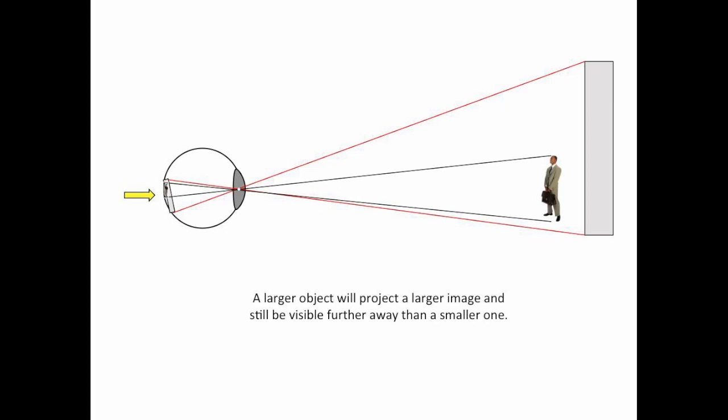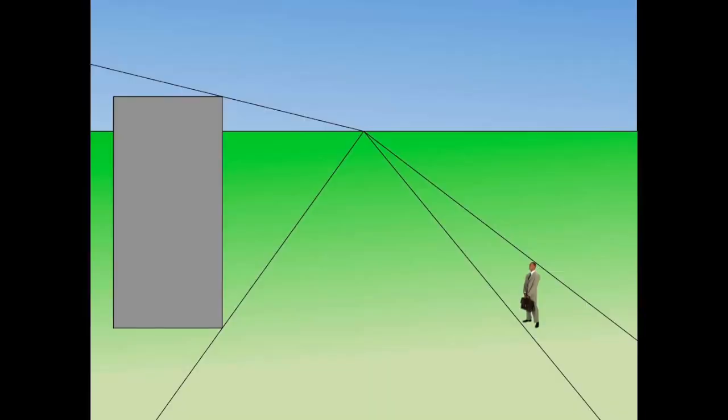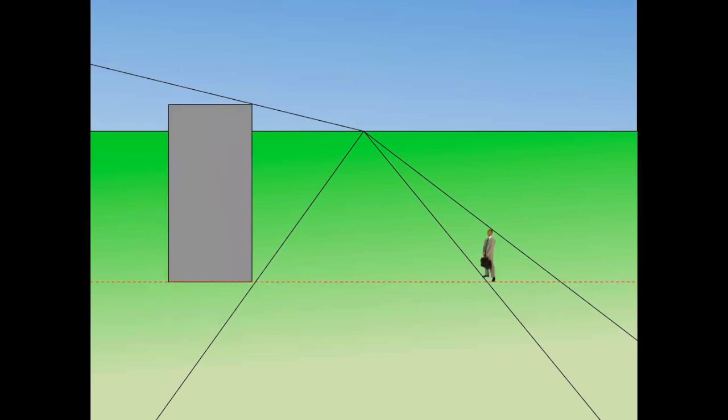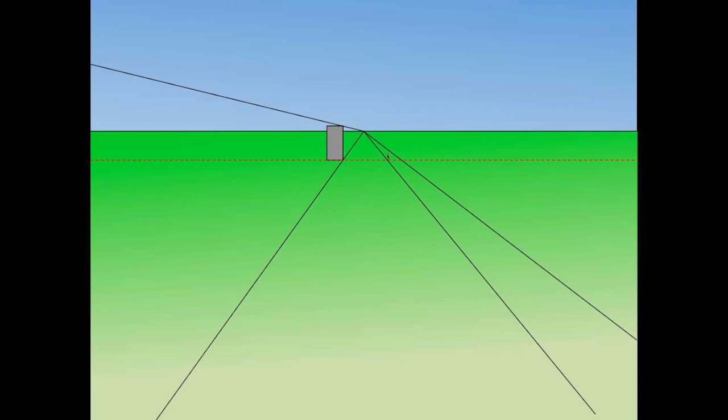So here we've got our little guy standing in front of a tall structure of some kind. And even though he is closer, he projects a smaller image than the larger object behind him. Here we have both of these objects. We have a person and a building, some structure of some sort. And they are the same distance away from us. That's what this red line indicates. So if we move them further away, each of the objects appears to get smaller. And if you move them really far away, they get very small. Now, notice that the person is getting pretty small and hard to see.